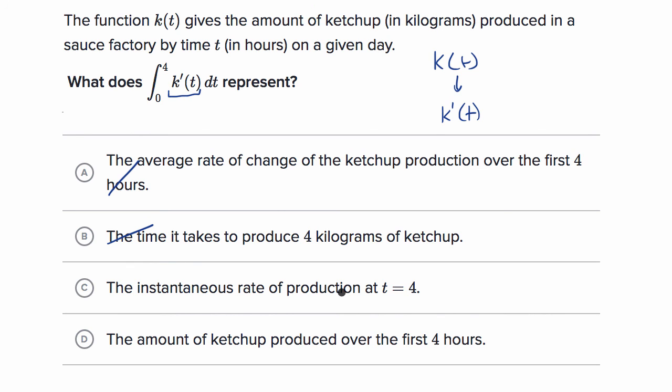The instantaneous rate of production at t equals four. No, this would be k'(4). That's not what this integral represents. The amount of ketchup produced over the first four hours. Yep, that is exactly right.